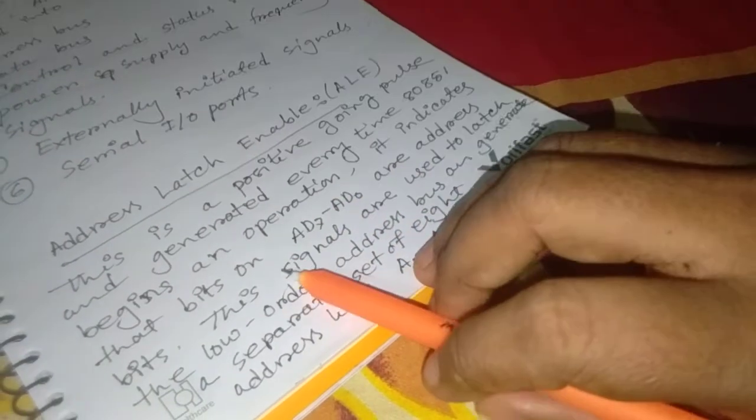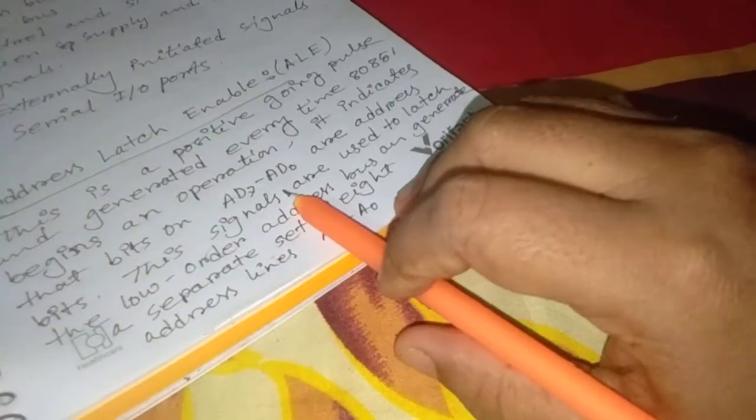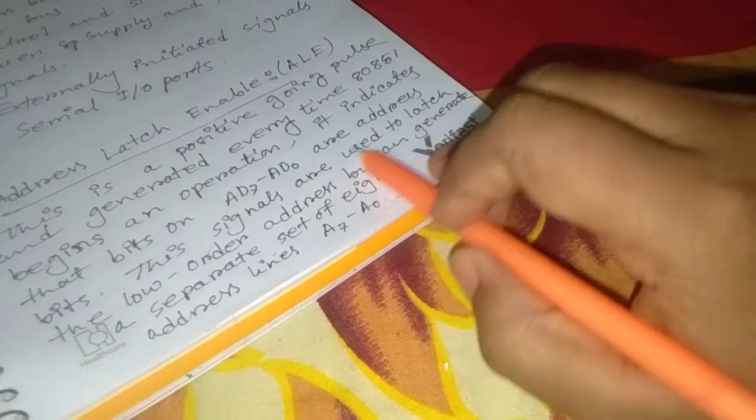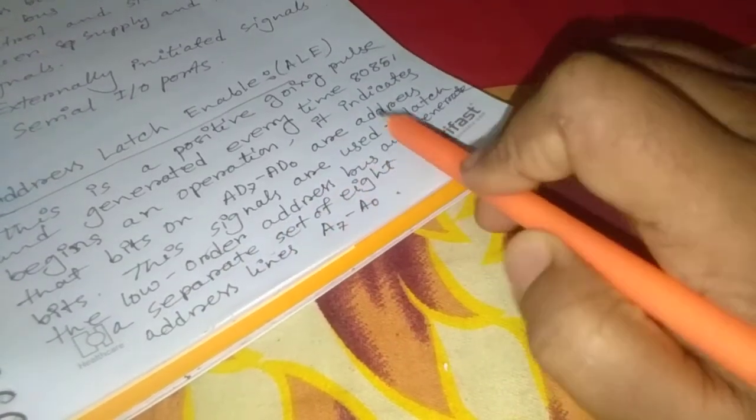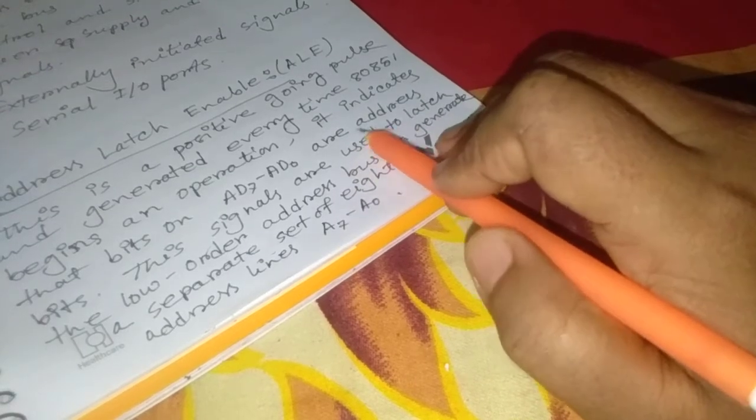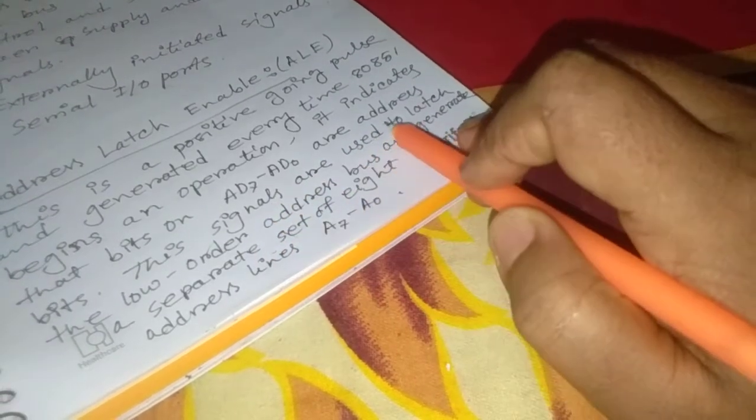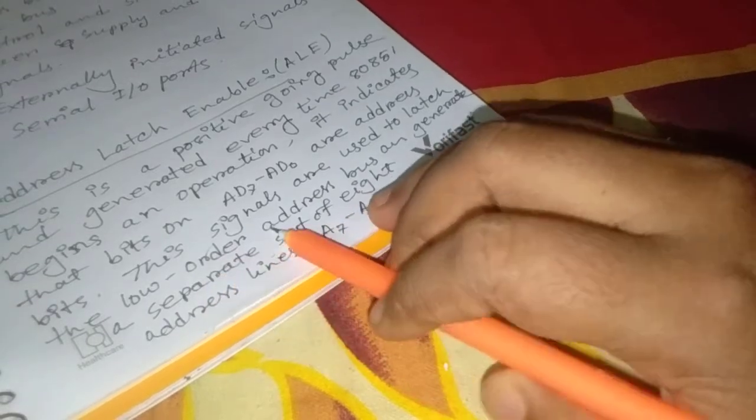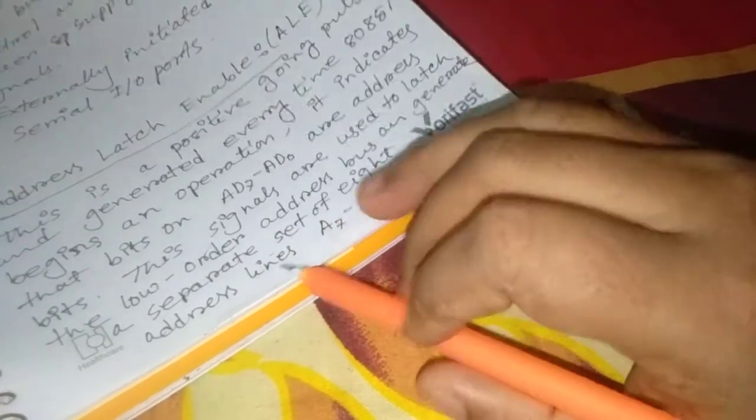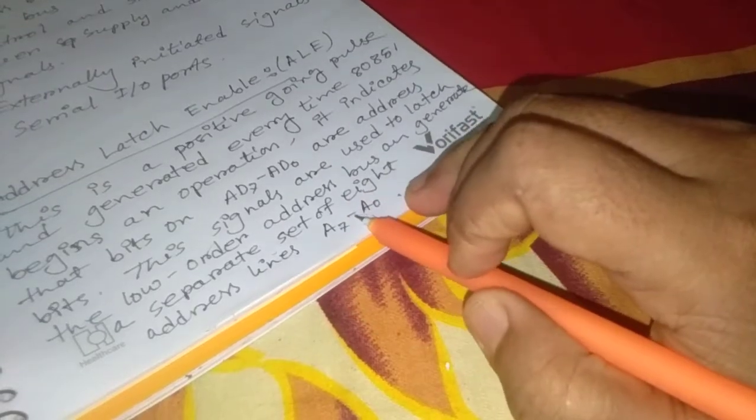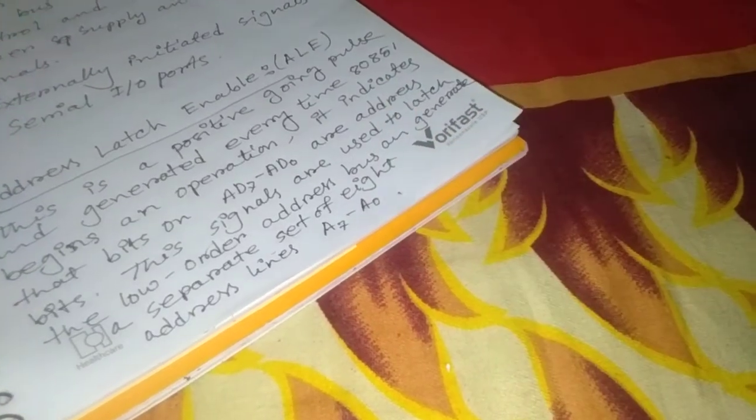It indicates that bits on AD7 to AD0 are address bits. These signals are used to latch the low order address bus and generate a separate set of eight address lines A7 to A0.